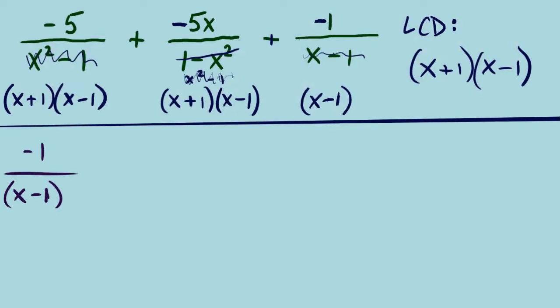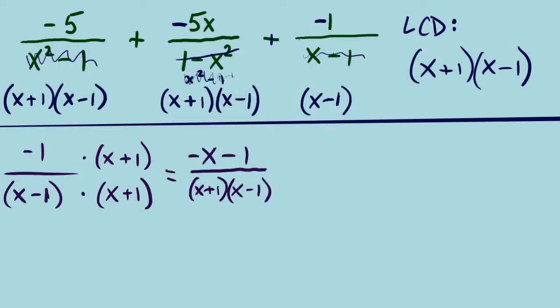Each fraction needs to be adjusted to have the LCD. The first one already has the LCD — nice. The second one also already has the LCD — also nice. The third fraction is the only one that needed a change. It is negative 1 over x minus 1. What is missing from the denominator? The x plus 1. We multiply that to top and bottom, keeping the denominator factored. For the numerator, we distribute: negative 1 times x is negative x, and negative 1 times positive 1 is negative 1.